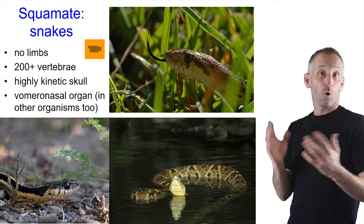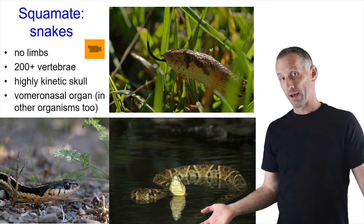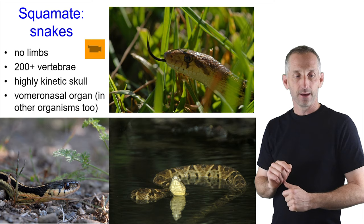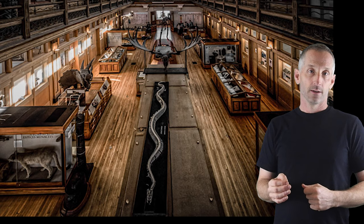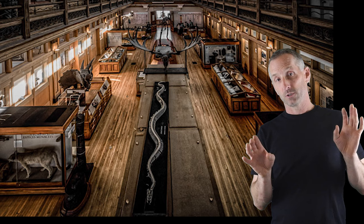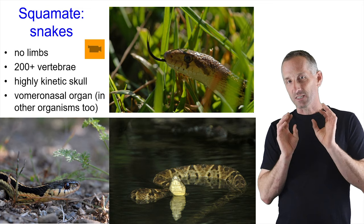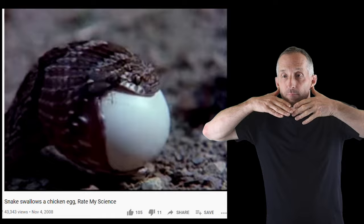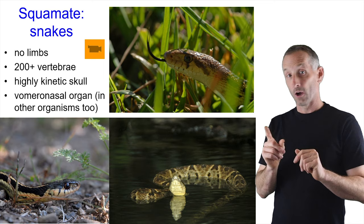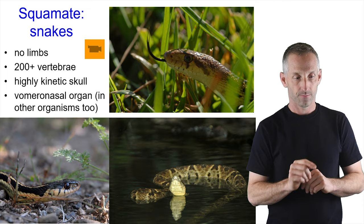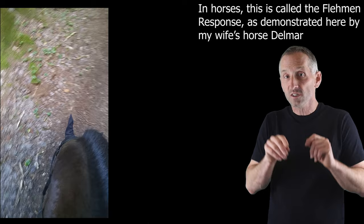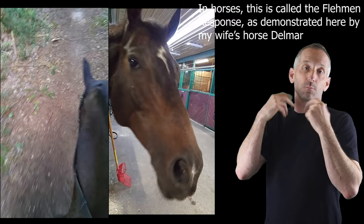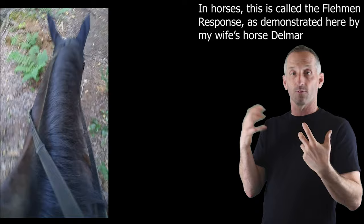Snakes are a really amazing part of the squamate group. They don't have limbs, with an exception you'll see later, and they have an incredible replication of vertebrae — up to 200. They also have a highly kinetic skull allowing them to swallow very large objects like eggs or deer, essentially dislocating their jaw to swallow things much bigger than their head. They also have a cool vomeronasal organ, not just found in snakes — it's also found in horses, which raise their upper lip to sense compounds in the air.